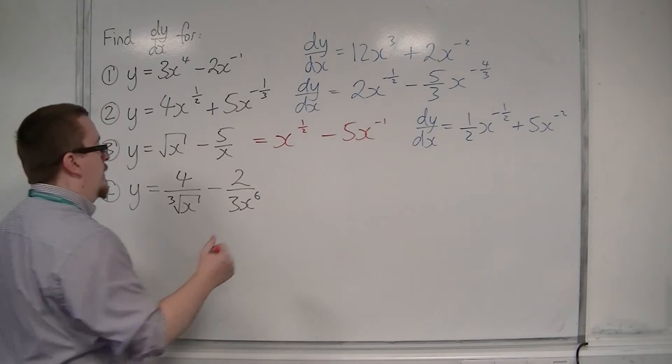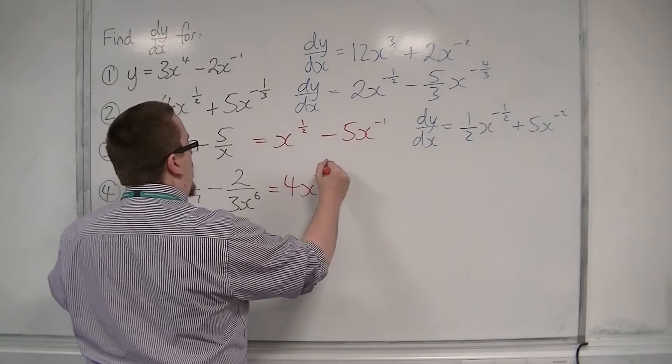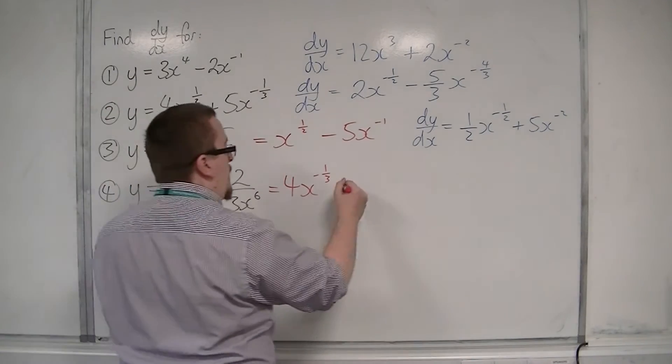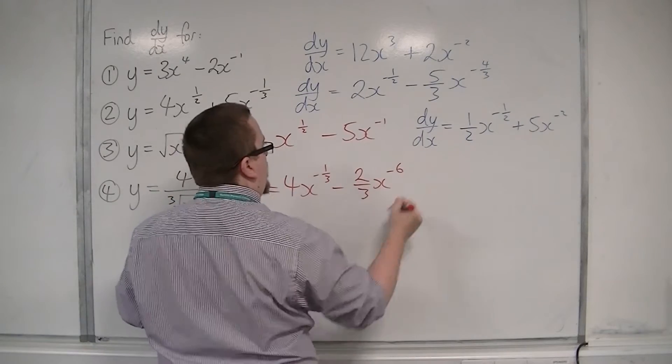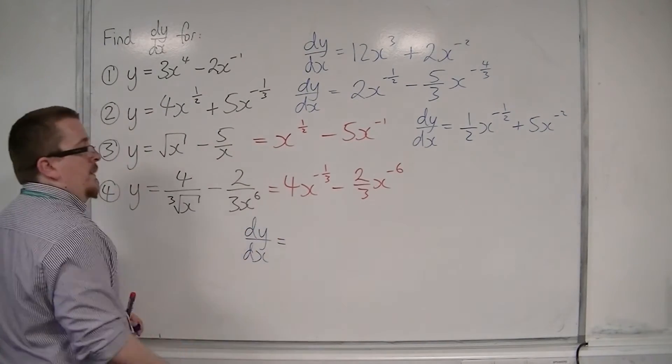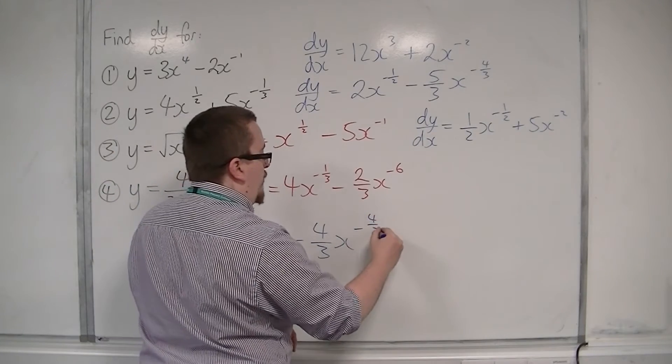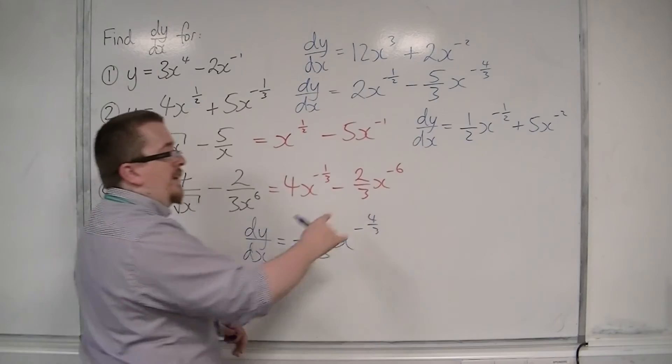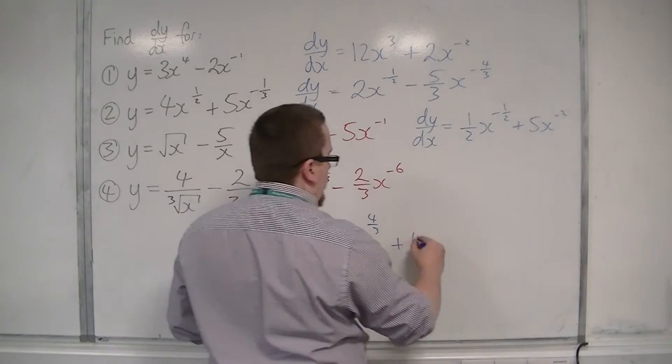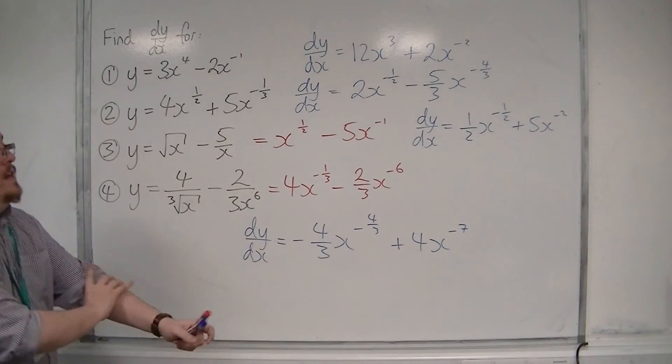Now we're going to do the same with number 4. So we have 4 over the cube root of x, so that's 4x to the power of minus 1 third, and then minus 2 over 3x to the 6 is minus 2 thirds x to the minus 6. So dy by dx for this fourth one, the minus 1 third comes down to the front, we're going to have minus 4 thirds x. Take 1 off the power, we're now going to have minus 4 thirds. And then the minus 6 is going to come down to the front and multiply with that minus 2 thirds. So I'm going to have plus 12 over 3, which is 4x, and then take 1 off the power to the minus 7. And that is a perfectly valid way of writing my answer.